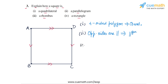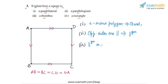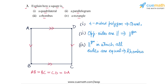In part 3, we have to explain why a square is also a rhombus. We have shown that a square is a parallelogram. The other thing about a square is that all four sides are equal: AB = BC = CD = DA. So a square is a parallelogram in which all sides are equal, which means any square will also be a rhombus.